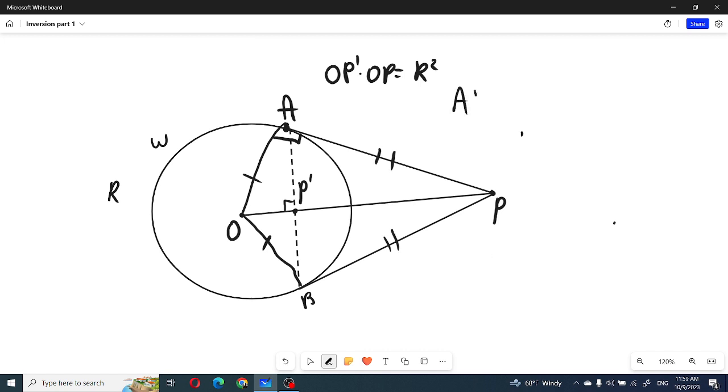So APBO must be kite, so from here we will conclude that AB must be perpendicular to OP. And if we look at OAP right triangle, we are given altitude and we can use the property that OA square equals OP prime times OP.